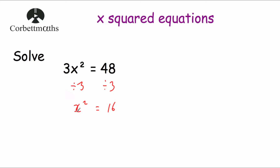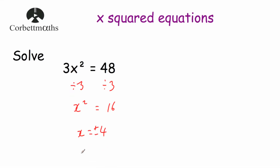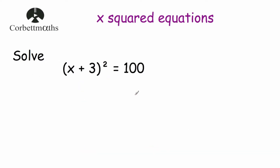We're looking for a number squared that gives us 16 — the square root of 16 is 4. So x could be equal to 4, but also remember that negative 4 times negative 4 is 16. So x equals plus or minus 4, meaning x equals 4 or x equals negative 4.